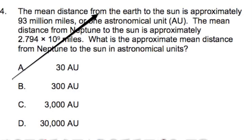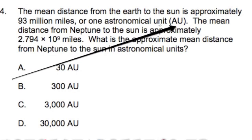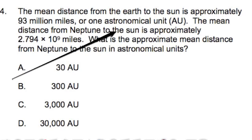The mean distance from Earth to the Sun is approximately 93 million miles, or one astronomical unit, AU. The distance from Neptune to the Sun is approximately 2.794 times 10 to the 9th miles. What is the approximate mean distance from Neptune to the Sun in astronomical units? And then they give us some answer choices: A, 30 AU; B, 300 AU; C, 3000 AU; and D, 30,000 AU.